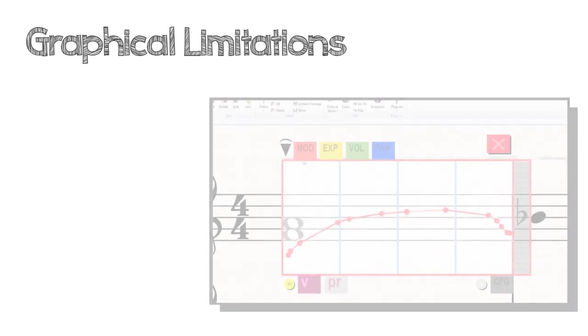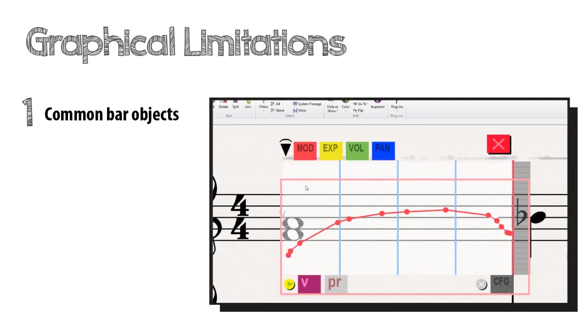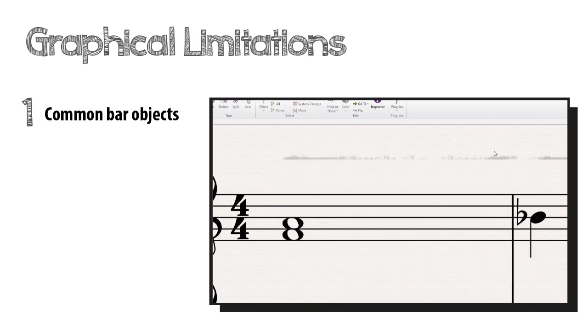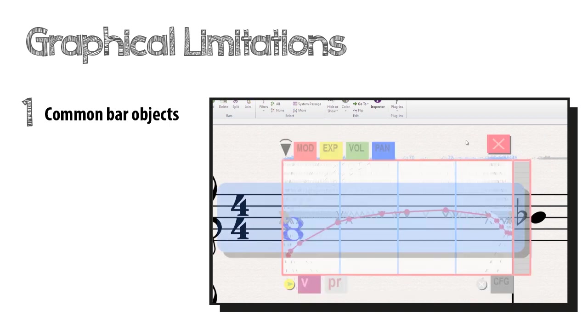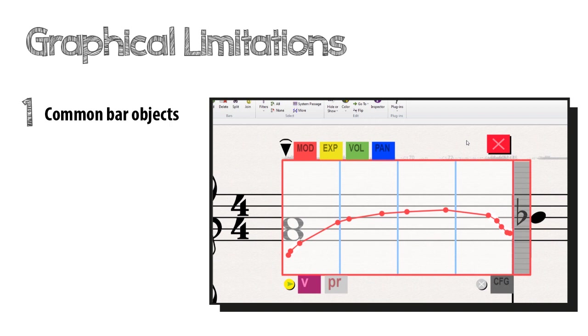Secondly, the plugin is written in manuscript, a language that was not conceived for this type of graphical applications. So, some limitations arise. One, the elements building the interface are common bar objects. So, you are able to move them and fool around by breaking things. Try not to do it, but don't worry if it happens accidentally. All elements are marked so that they disappear when the bar is closed. Also, if you are to print a score, remember to close the bar so that the elements of the interface are not printed.